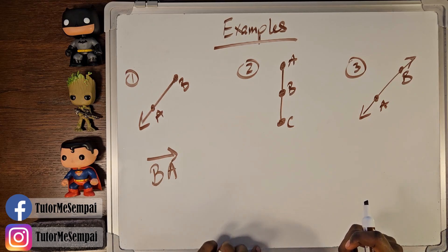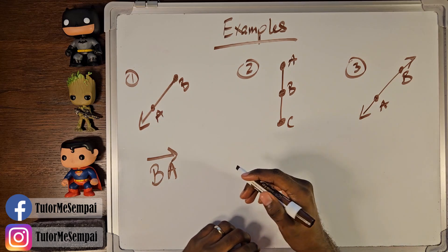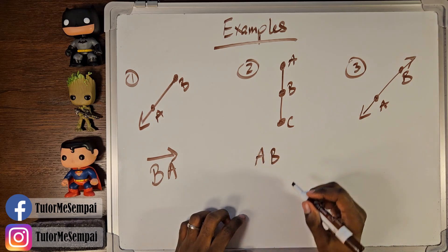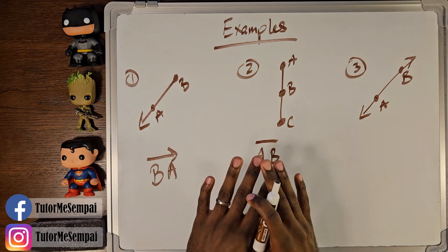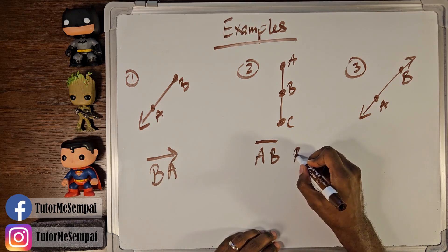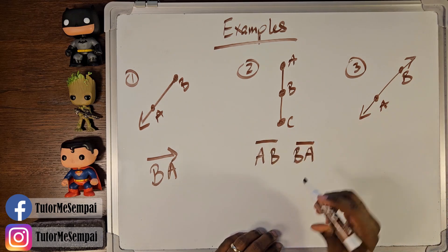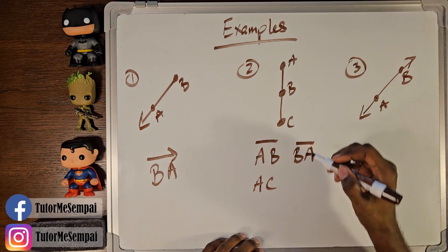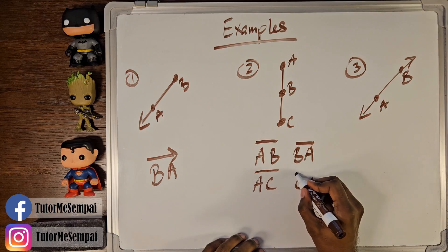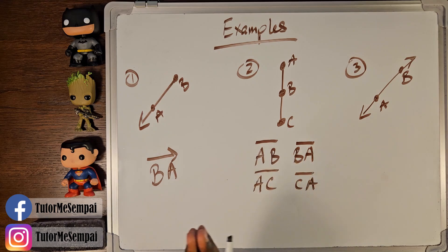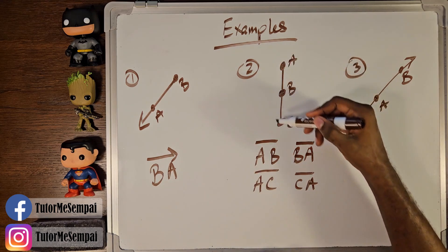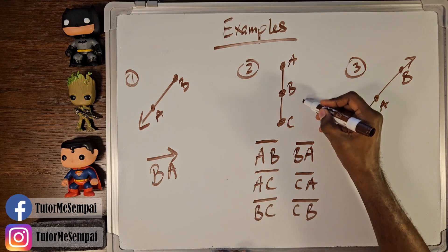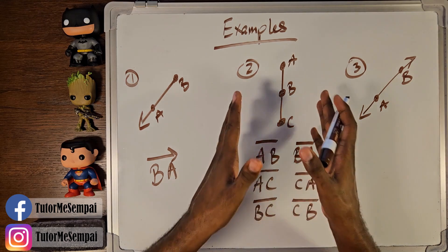For number two, we have a line segment with three points, so we can write all the line segments we see. We can have line segment AB — straight line on top, no arrows. We can have line segment BA because order doesn't matter. That covers this line segment. Now we can have line segment AC — that's the big line segment — and CA. And we can have BC and CB, which takes care of this line segment. That's going to be all the line segments in this figure.